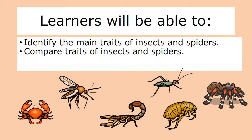Here are some pictures of insects and spiders. Can you identify some of them? We have the crab, the mosquito, the scorpion, the praying mantis, the flea, and also the spider.